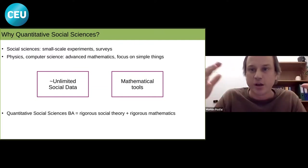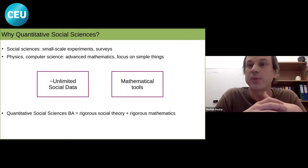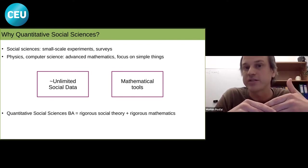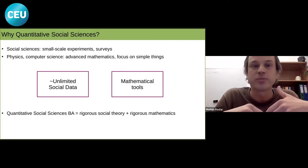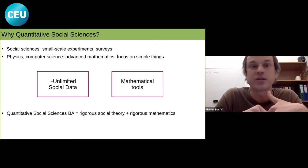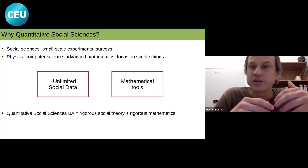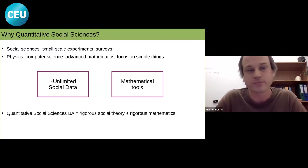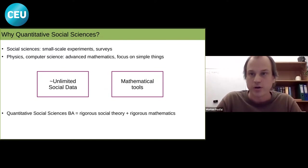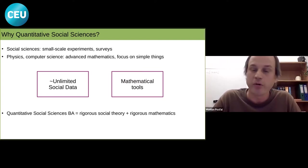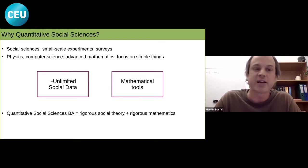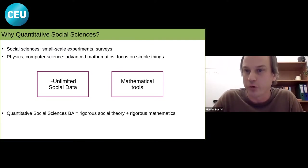We see a convergence: social scientists became interested in the tools of physics and computer science because they want to analyze rich datasets, while physicists and computer scientists realized they can do measurements on social data and develop new algorithms to understand it. To work on this data effectively, you need a background in both rigorous social theory and rigorous mathematics — and this is exactly what the Quantitative Social Sciences BA program provides.